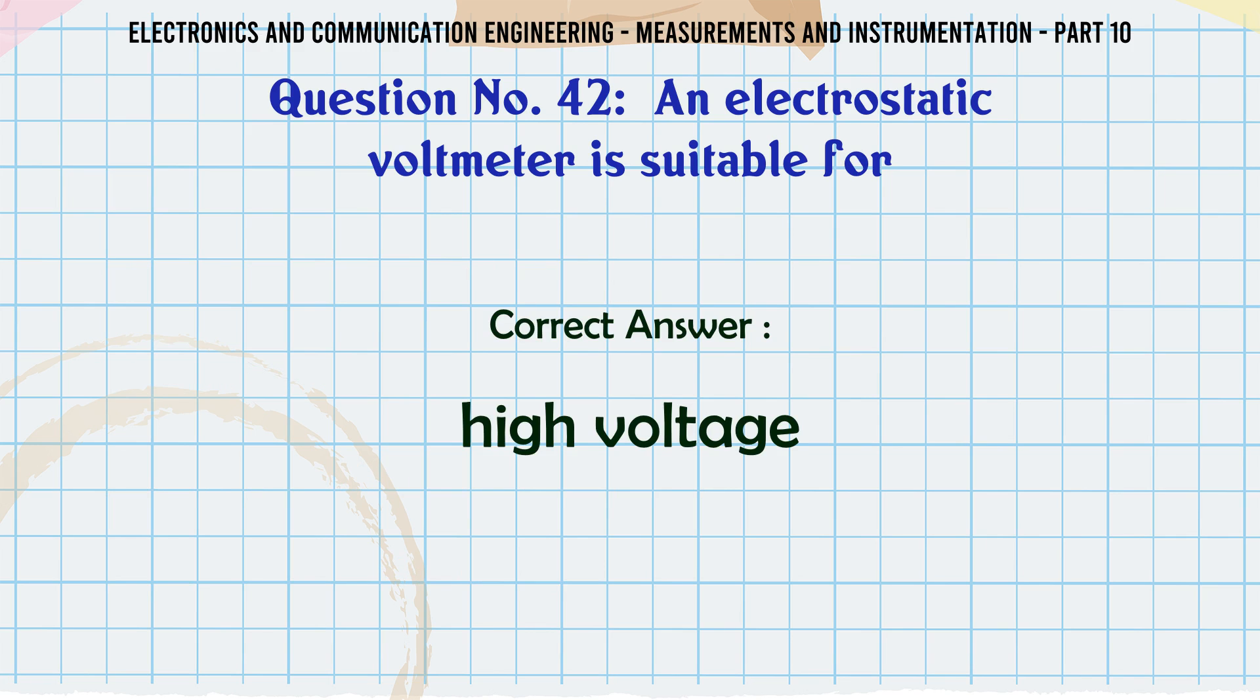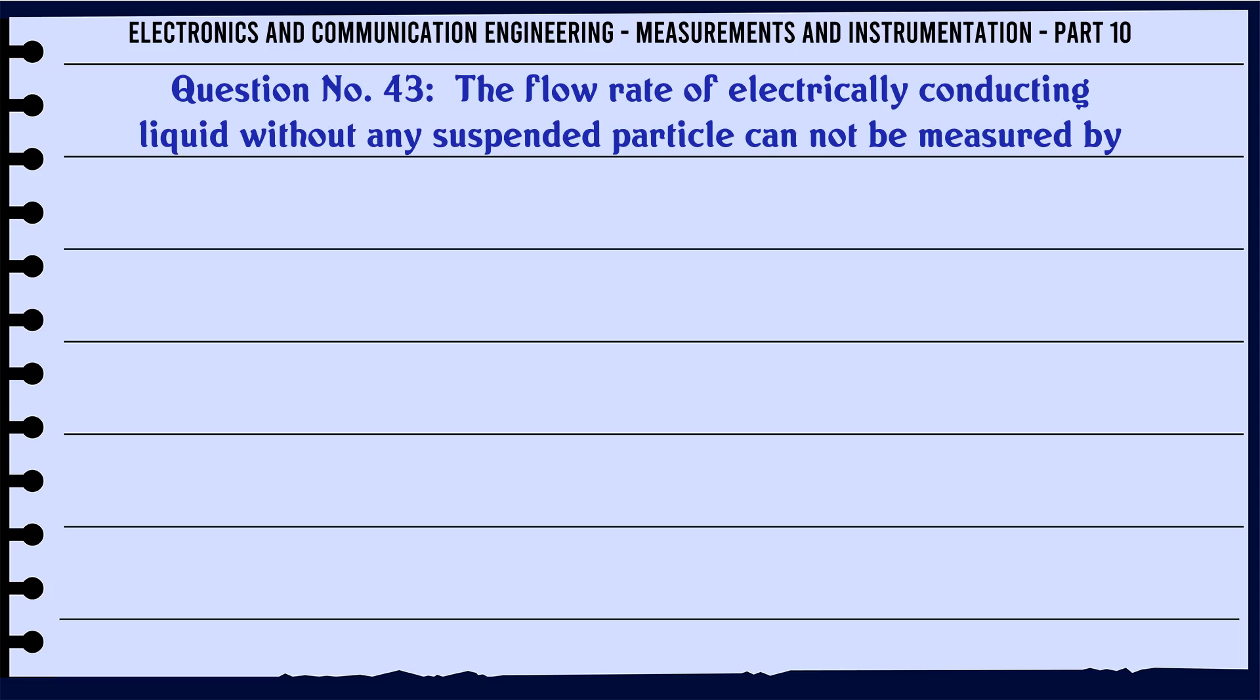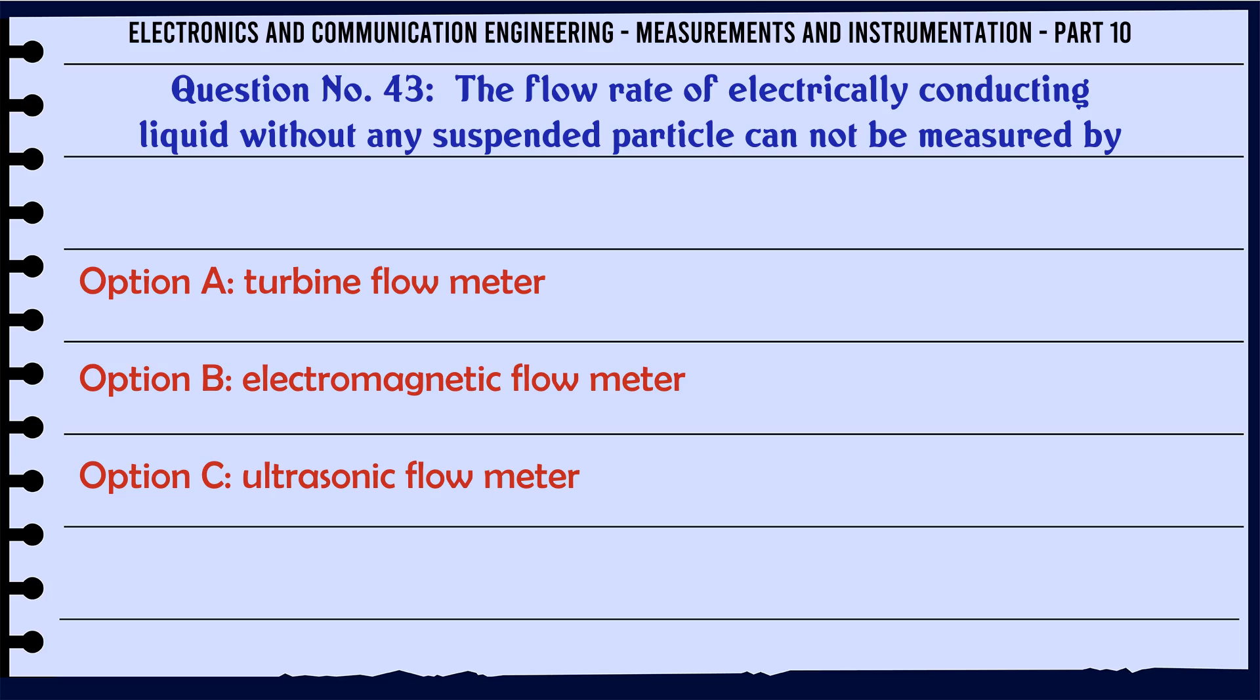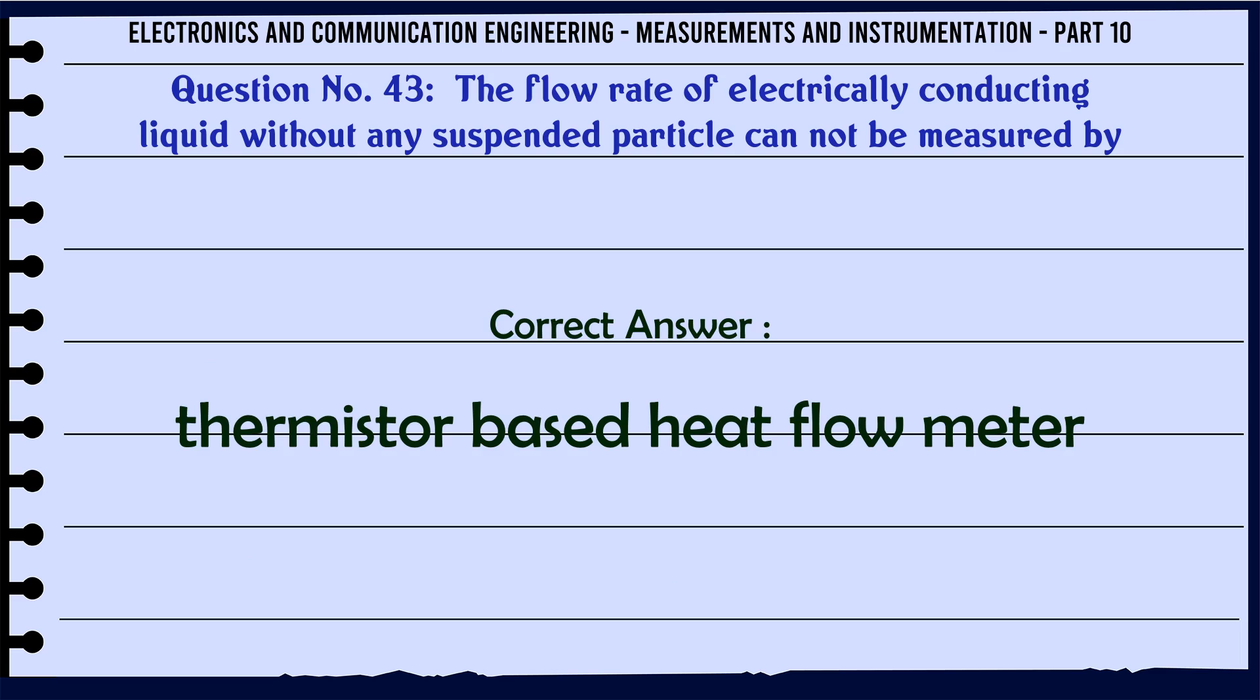The flow rate of electrically conducting liquid without any suspended particle cannot be measured by: A) turbine flowmeter, B) electromagnetic flowmeter, C) ultrasonic flowmeter, D) thermistor based heat flowmeter. The correct answer is thermistor based heat flowmeter.